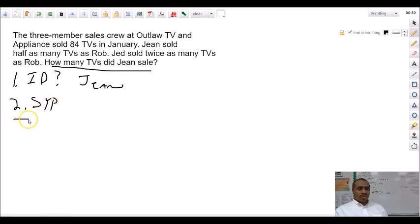So, the first thing we know is the total TVs sold were 84. And Jean sold double, right? So, for J, we're going to, and we don't know how many Rob sold, so we're going to call it X. So, it's going to be 2X because Jean sold twice as many as however many he sold. And Jed, oh, sorry, Jean sold half as many.